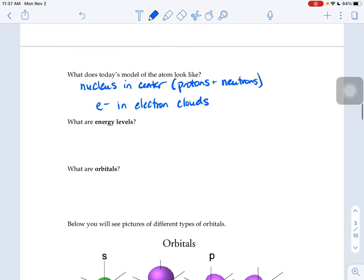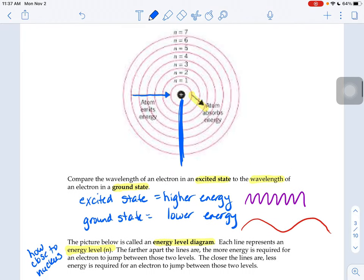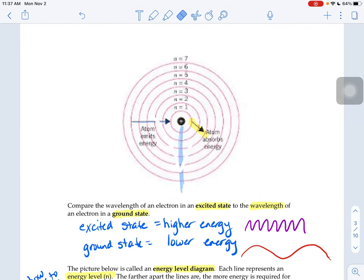When we look at pictures like this of an atom, it kind of makes it seem like the atom is flat, that it's only two-dimensional. And atoms are really 3D objects.